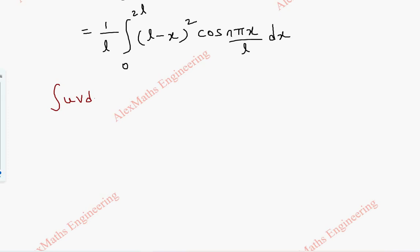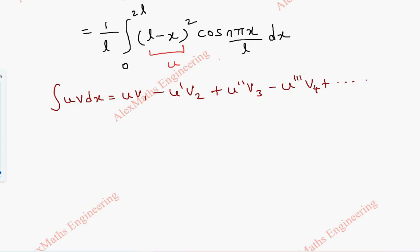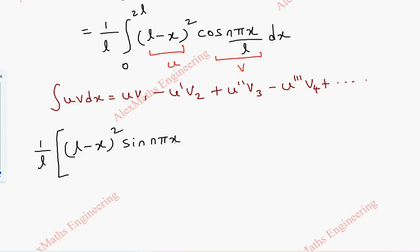Bernoulli's integral formula is: ∫uv dx = u·v₁ − u'·v₂ + u''·v₃ − u'''·v₄ + … Here u = (L − x)² and v = cos(nπx/L). v₁ is the integration of cos(nπx/L), which is sin(nπx/L) divided by (nπ/L).